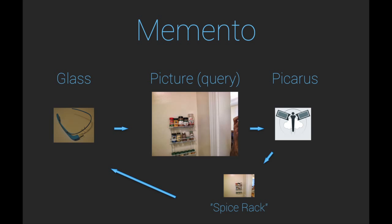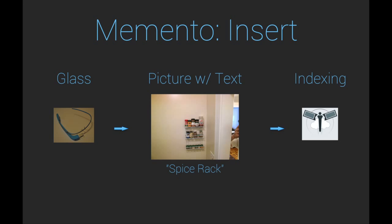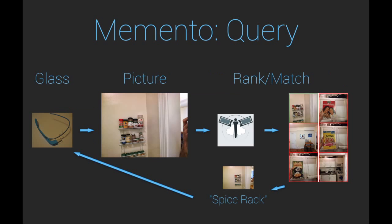A new addition to Open Glass is a system we call Memento. With Memento, one user can take a picture with Glass and attach a text label to it, while another user can send an image as a query, and any text or location annotations are sent back to the user's Glass. To make a Memento, a user takes a picture with Glass and attaches text to it, then shares it with a Memento contact. The picture is then indexed using Picarus. When a user sends a picture to Open Glass, we use Picarus to rank the images in Memento and identify any matches to the query image. If any matches are found, we send the original images along with any annotations back to the user's Glass.